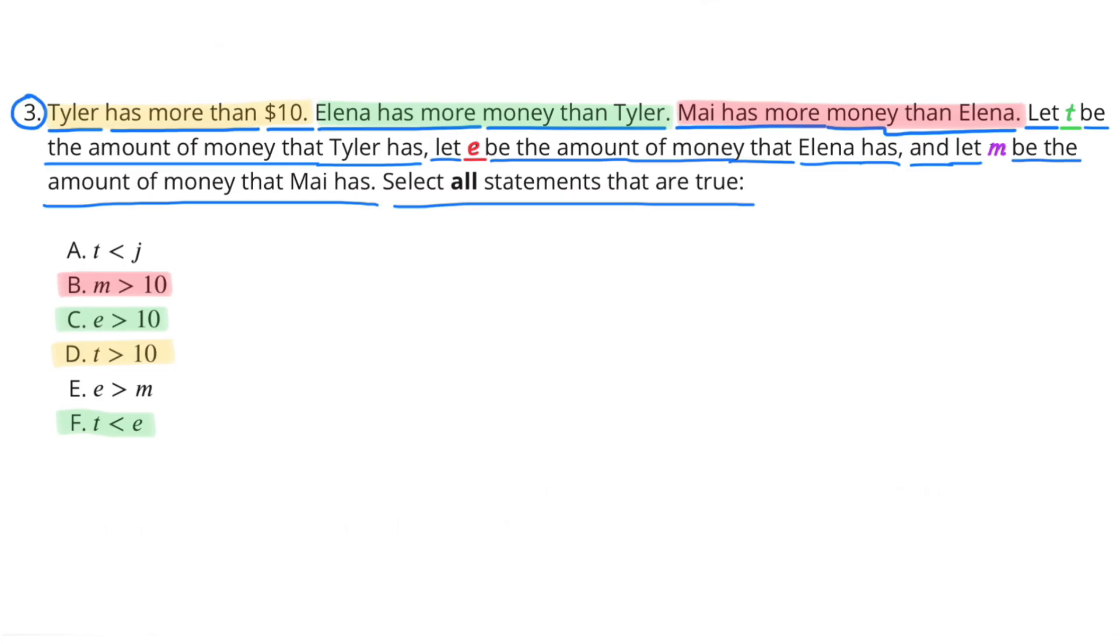And finally I selected F: T is less than E. Elena has more money than Tyler, so Tyler has less money than Elena.